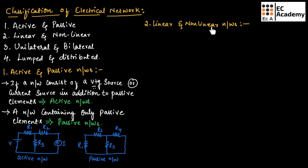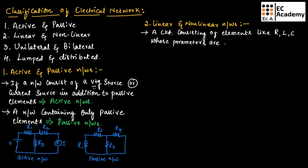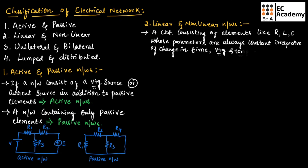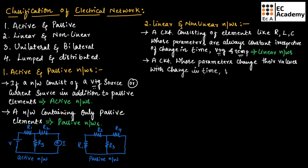Now let us understand what is linear and non-linear networks. A circuit consisting of elements like resistor, inductor, and capacitor, whose parameters are always constant irrespective of change in time, voltage, and temperature, are known as linear networks. A circuit whose parameters change their values with change in time, voltage, and temperature are known as non-linear networks.